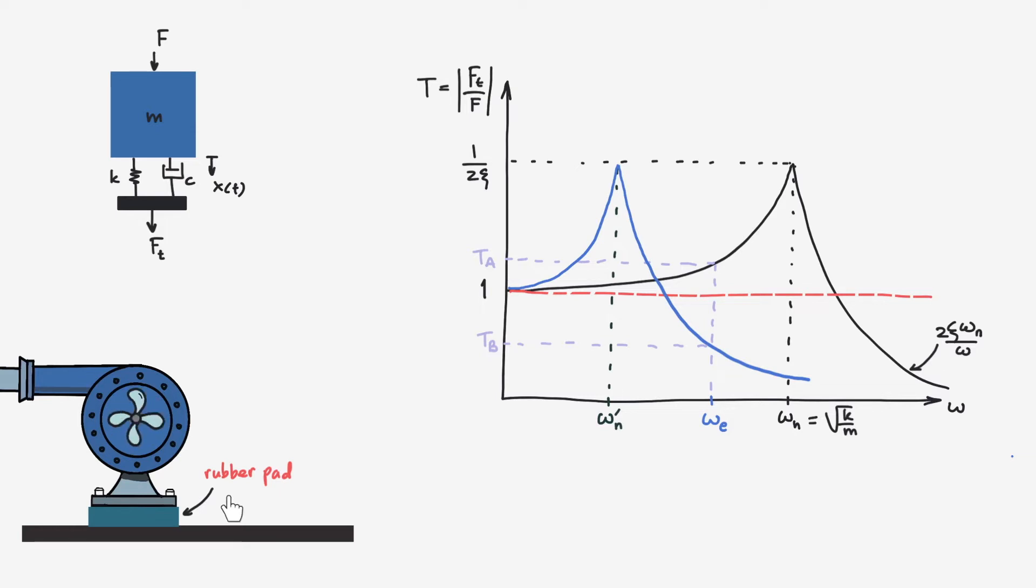The next question is, what if we use the same rubber pad with the same stiffness constant but with higher damping? We can see from the graph that the peak at the resonance is controlled by one over two zeta, so increasing the damping loss factor zeta will reduce the peak amplitude. And now what about the level at the isolation area? Remember that the level at this area is proportional to the value of the damping loss factor, so the level here is not going to be lower but will be higher.